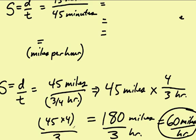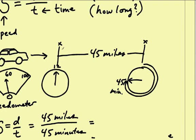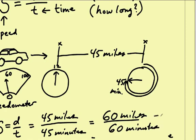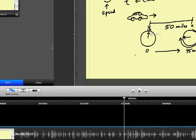And that really makes sense, because something that travels 45 miles in 45 minutes should travel 60 miles in 60 minutes. 45 miles in 45 minutes is the same as 60 miles in 60 minutes. And 60 minutes we know is one hour, so that's 60 miles per hour. Thank you.